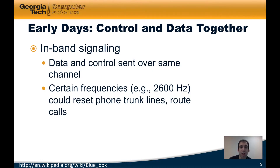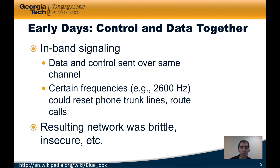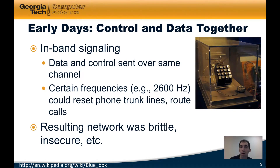Certain frequencies in this channel — for example, 2600 Hz — could do things like reset phone trunk lines, and other types of things like pulses on the line could be used to route calls and set up circuits for calls. While this offered some advantages in terms of simplicity, the resulting network turned out to be fairly brittle and insecure. Here's an example — a picture of Steve Wozniak's Blue Box. The Blue Box was something that various hobbyists developed to send signals, pulses, and frequencies over the phone network's channel to essentially take control of it. This box was able to do things like reset a phone trunk line, route phone calls to a particular place, and so forth.